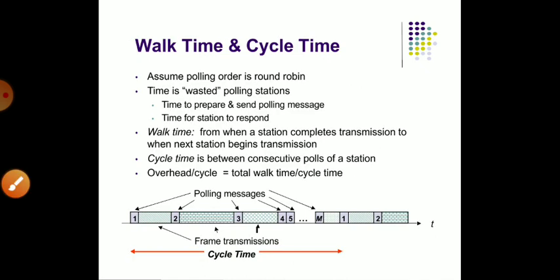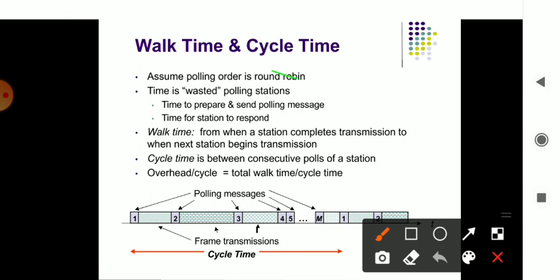This is the walk time of the polling system. Walk time means wasted time slots are removed from the system, and the system can send information for a certain amount of time. Overhead is dependent on the total walk time divided by cycle time. Total walk time is how much time one cycle takes to execute, and cycle time is the time to execute a single frame — that is the overhead of this cycle.